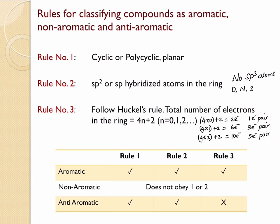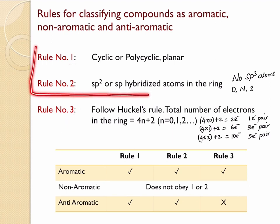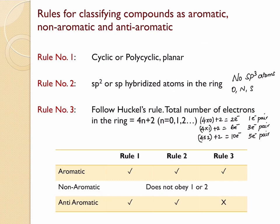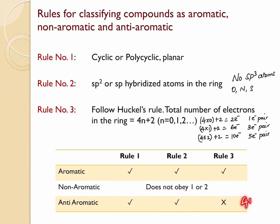For a compound to be aromatic it needs to follow all three rules. If one of the first two rules is disobeyed, the compound falls under the category of non-aromatic. But if rules one and two are obeyed but rule three is not — meaning instead of a 4n+2 system it is a 4n system with even pairs of electrons, such as two or four electron pairs — then it falls under the category of anti-aromatic.